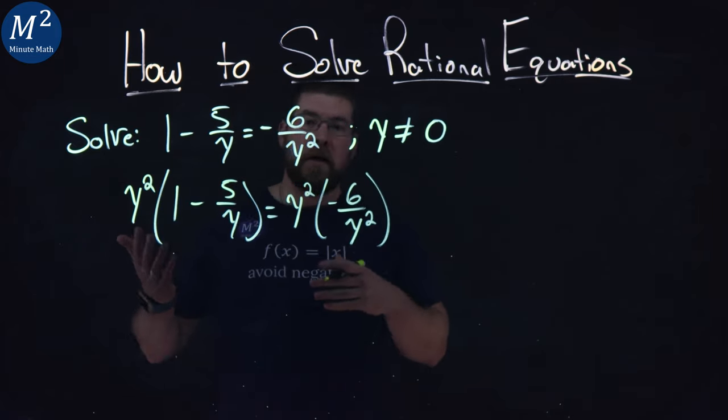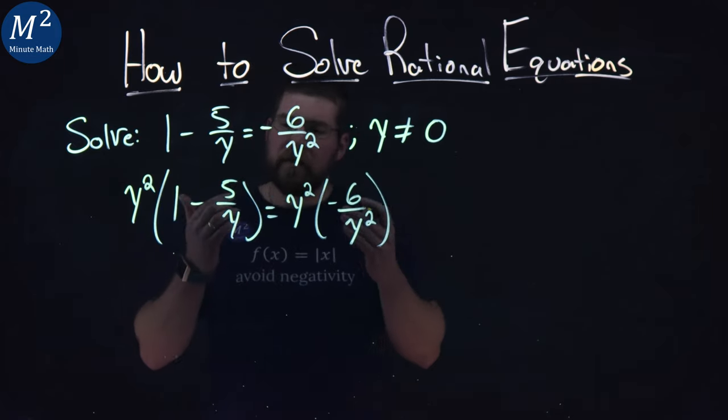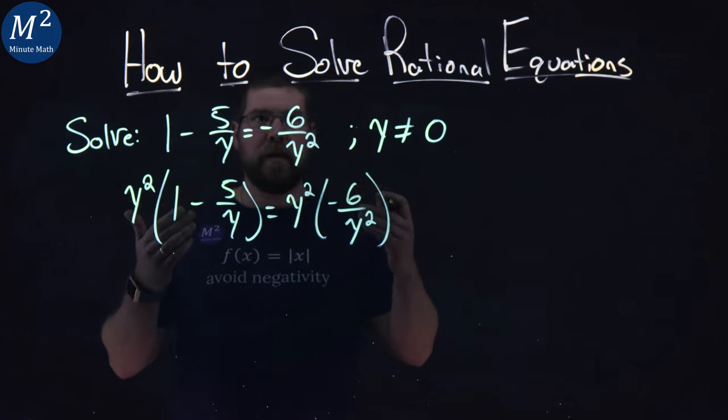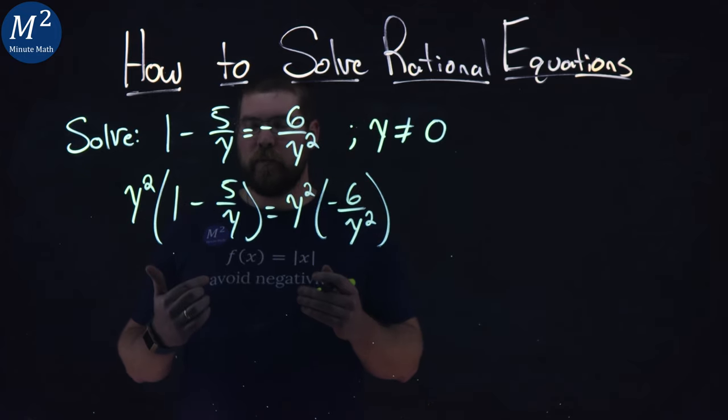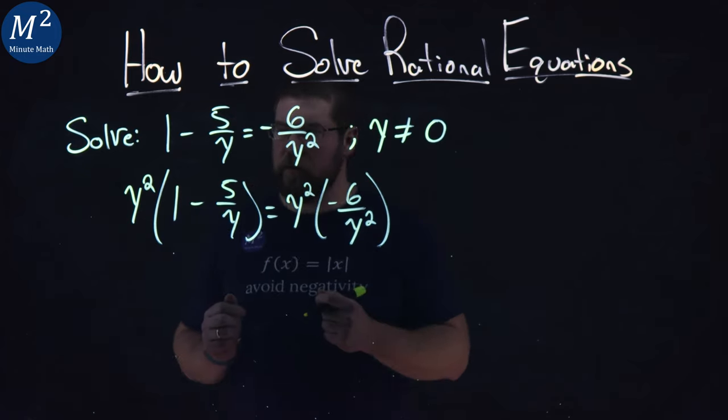And what I do to one side of the equation, I can do to the other, but what this allows me to do is really eliminate the rational equation here. And this is one of the techniques that you can use here.